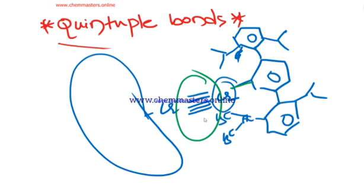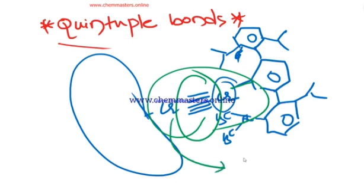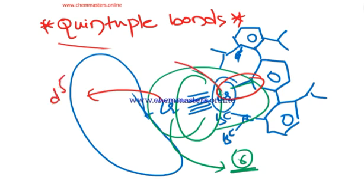We know that each chromium contains six valence electrons. Here one electron is used to make coordination with the substituted aryl ligand, so each chromium has five electrons in its d orbital. The total electrons equals ten.